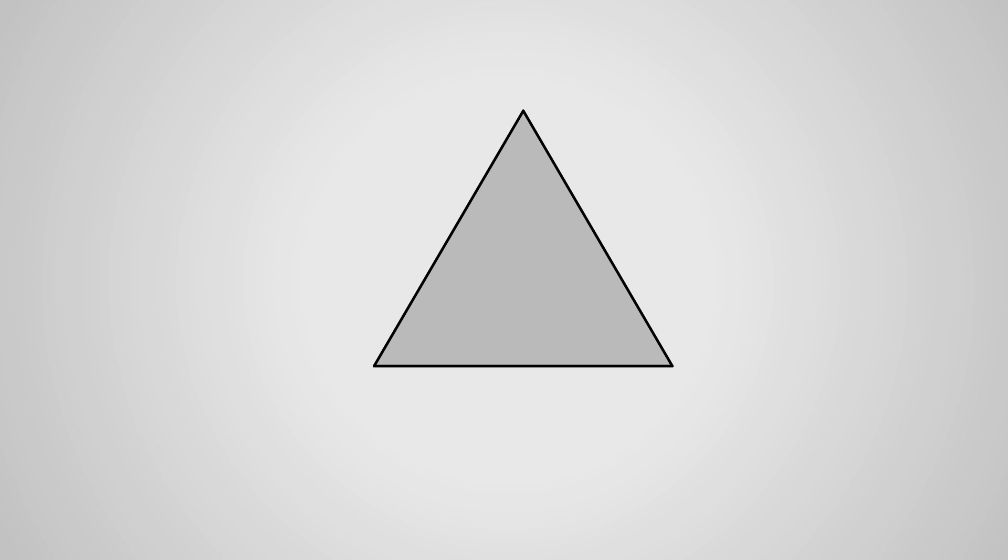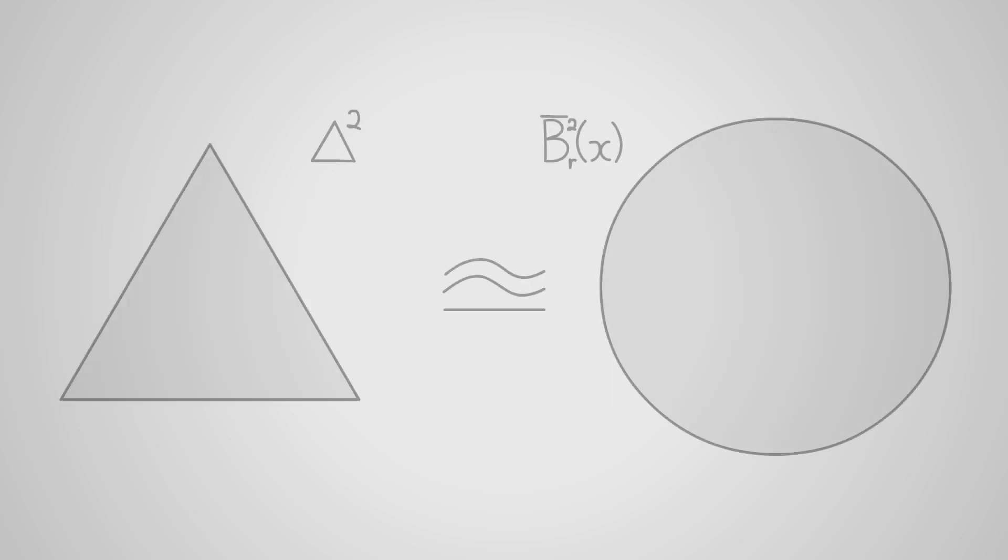But hang on. If us topologists only care about topological spaces up to homeomorphism, and simplices are homeomorphic to closed balls, then why are we talking about simplices rather than closed balls? Aren't they just the same as far as we care? We're making a choice here by paying attention to simplices, so we need to justify it.